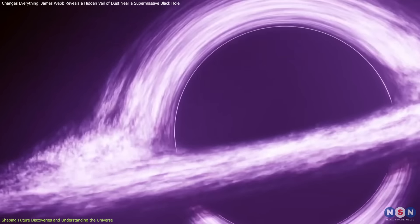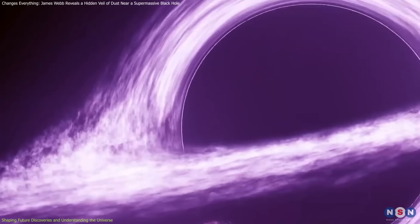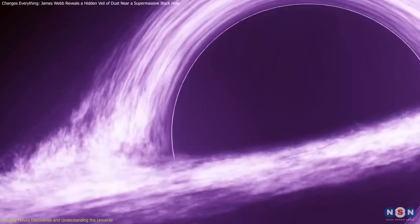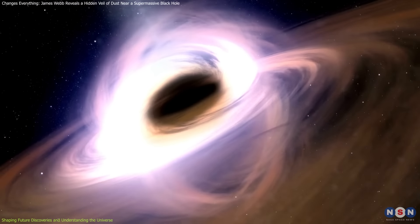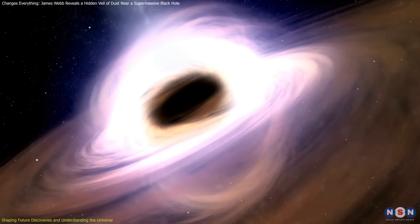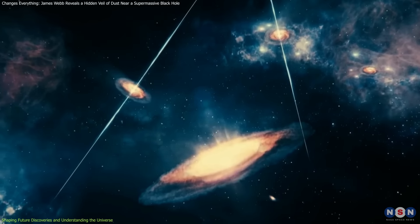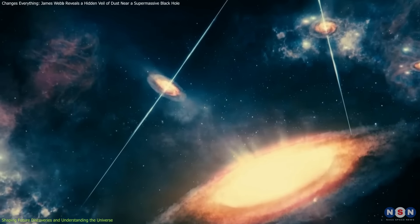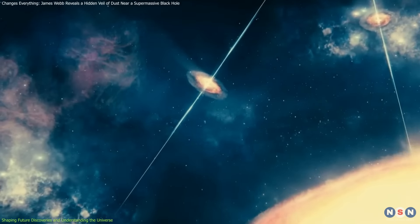but also for its relatively modest size compared to other black holes from the same epoch. The presence of a smaller supermassive black hole during this period raises intriguing questions about the diversity of black hole formation processes in the early universe.